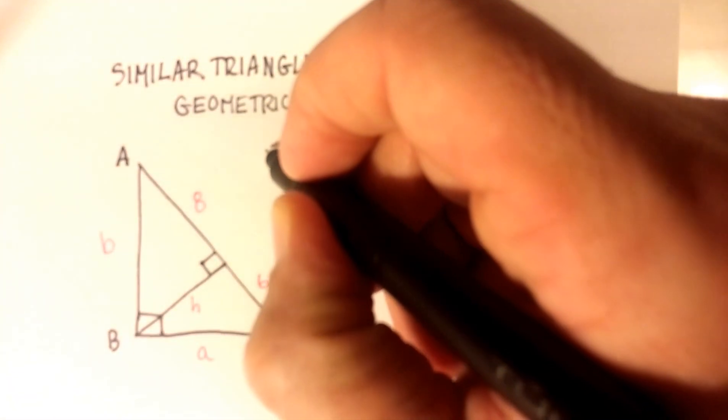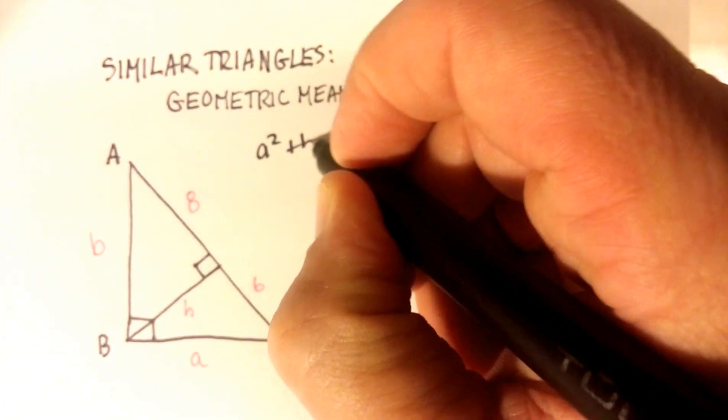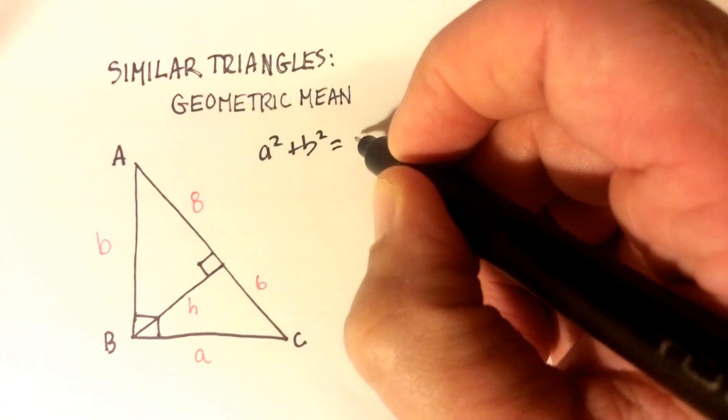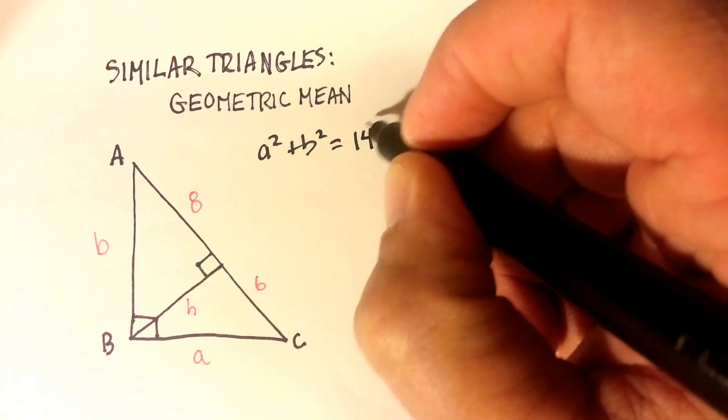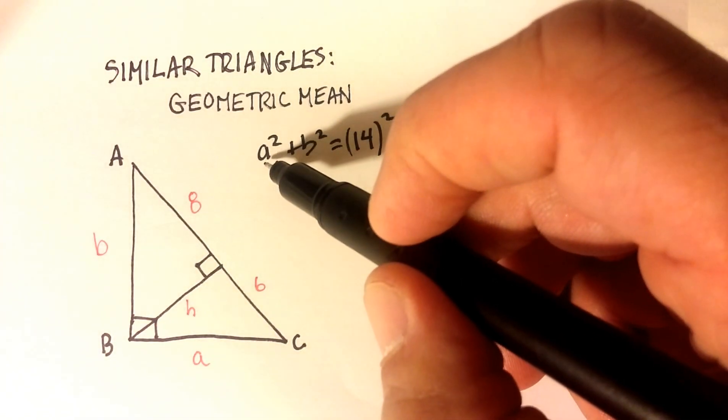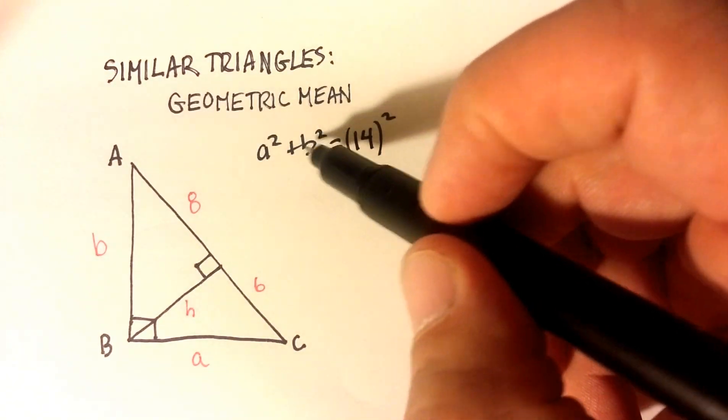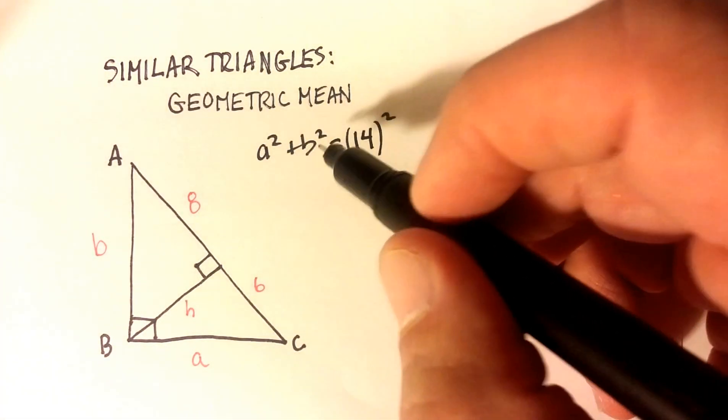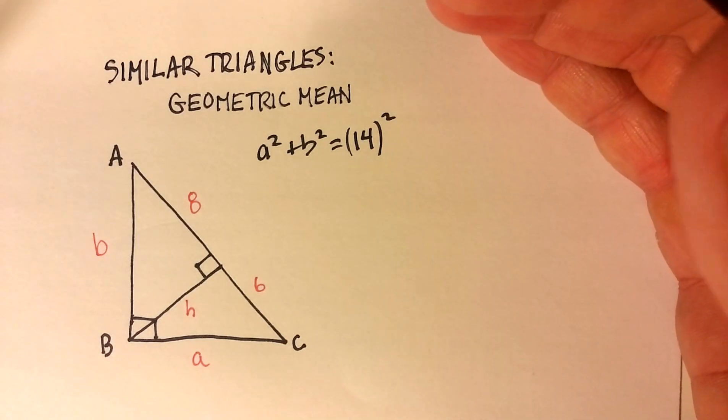The problem is A squared plus B squared equals 14 squared doesn't really give us a chance to determine what A is by itself or B is by itself. Because when you have two variables, you really can't solve for one or the other as just a regular number.